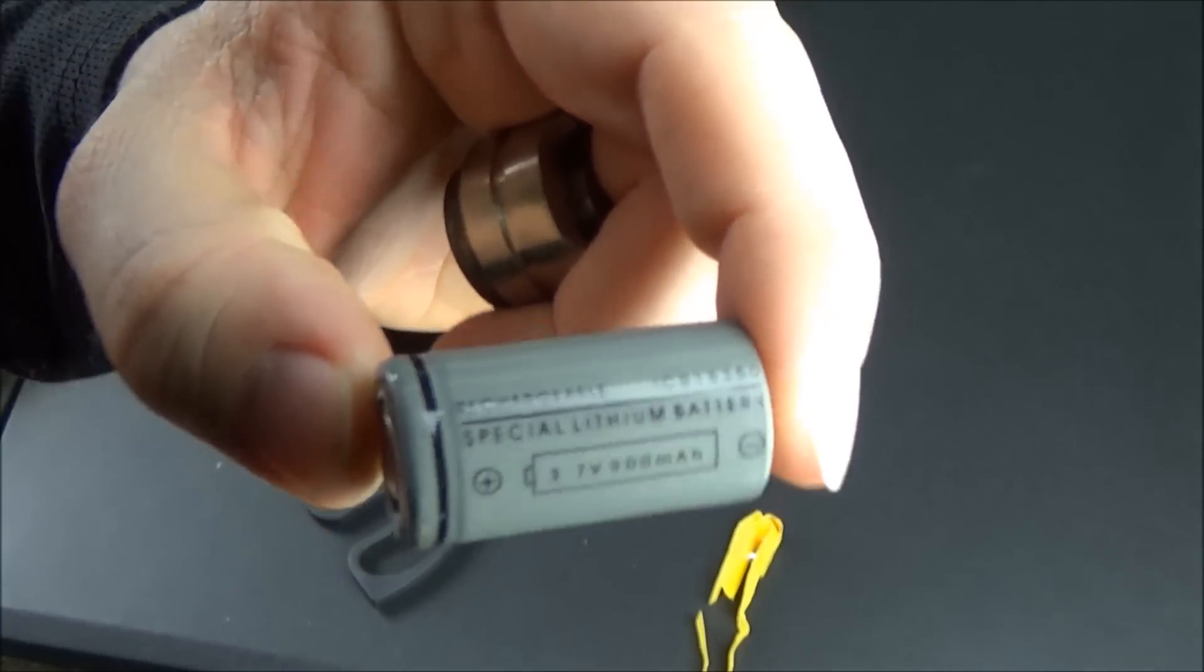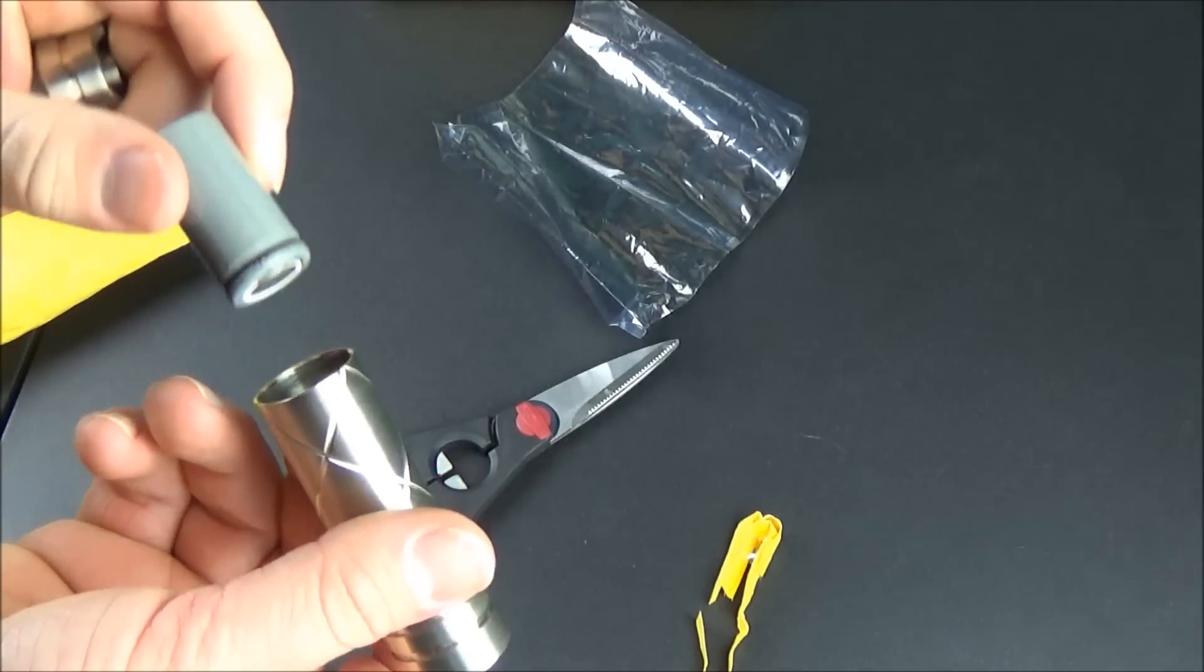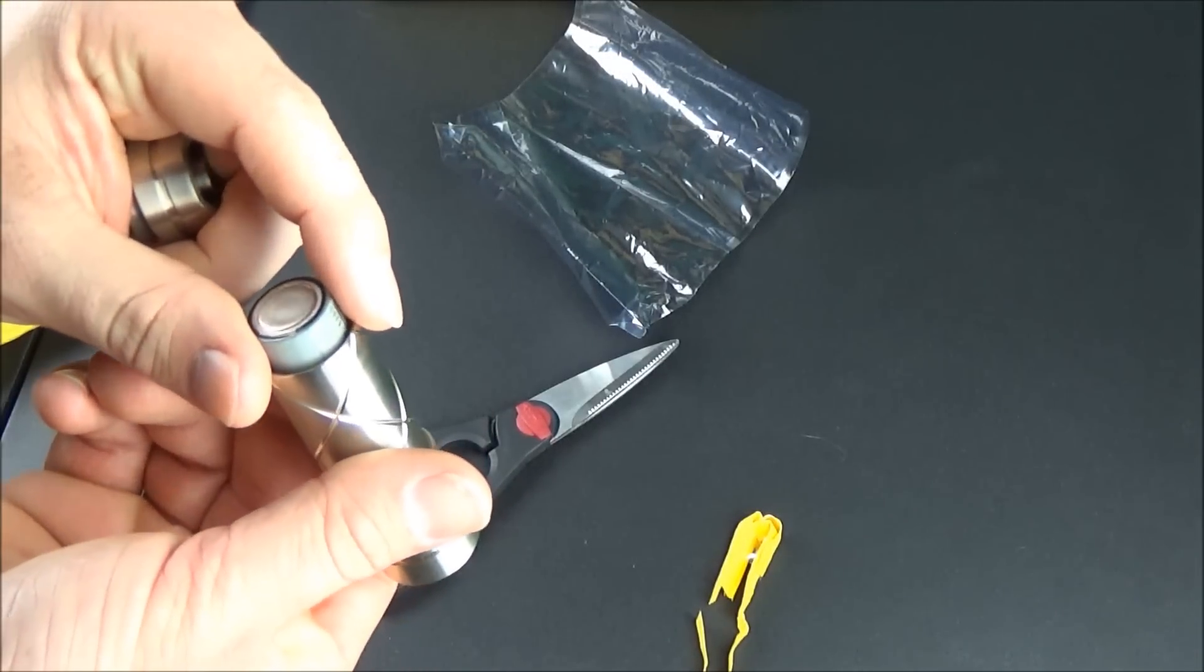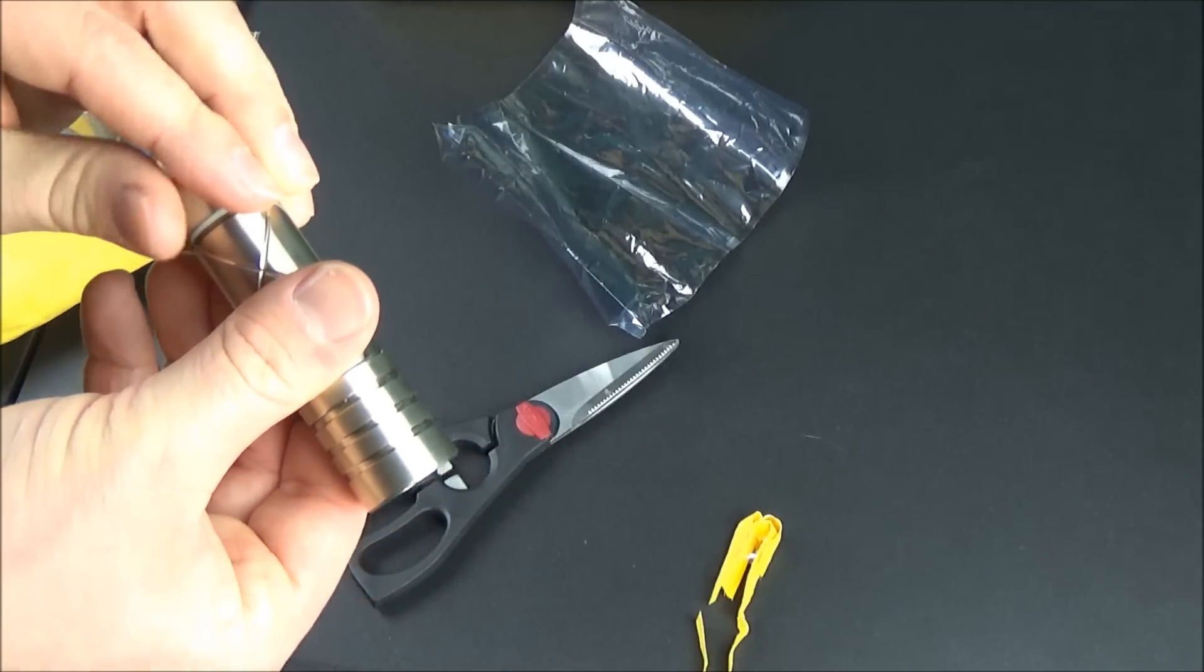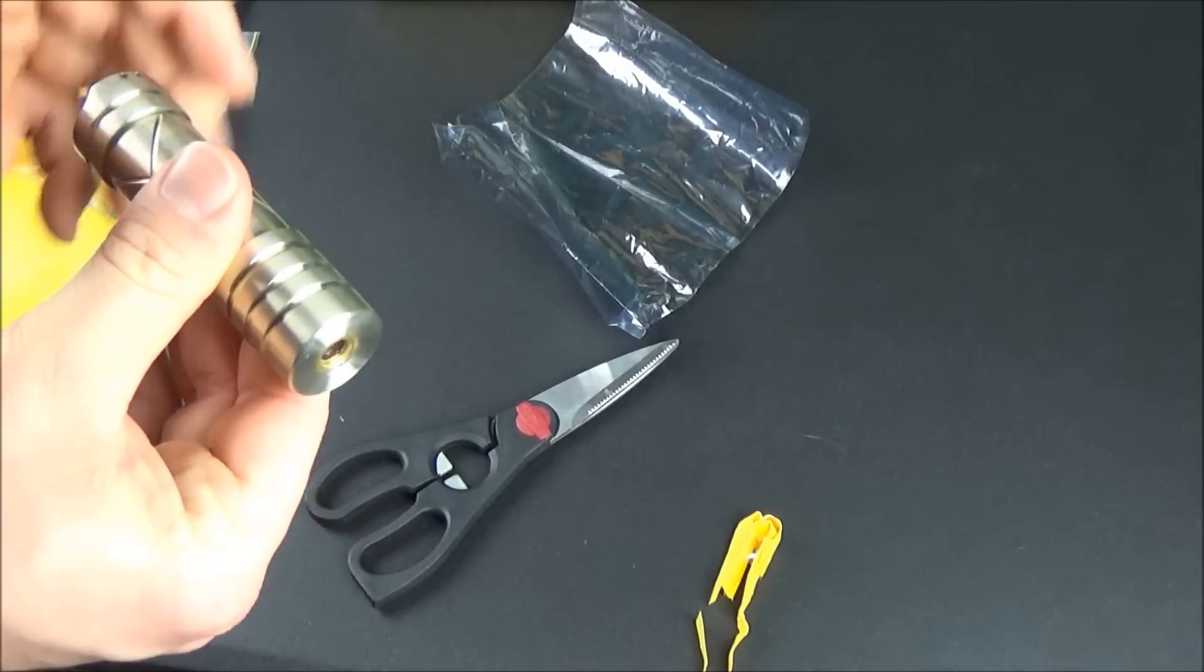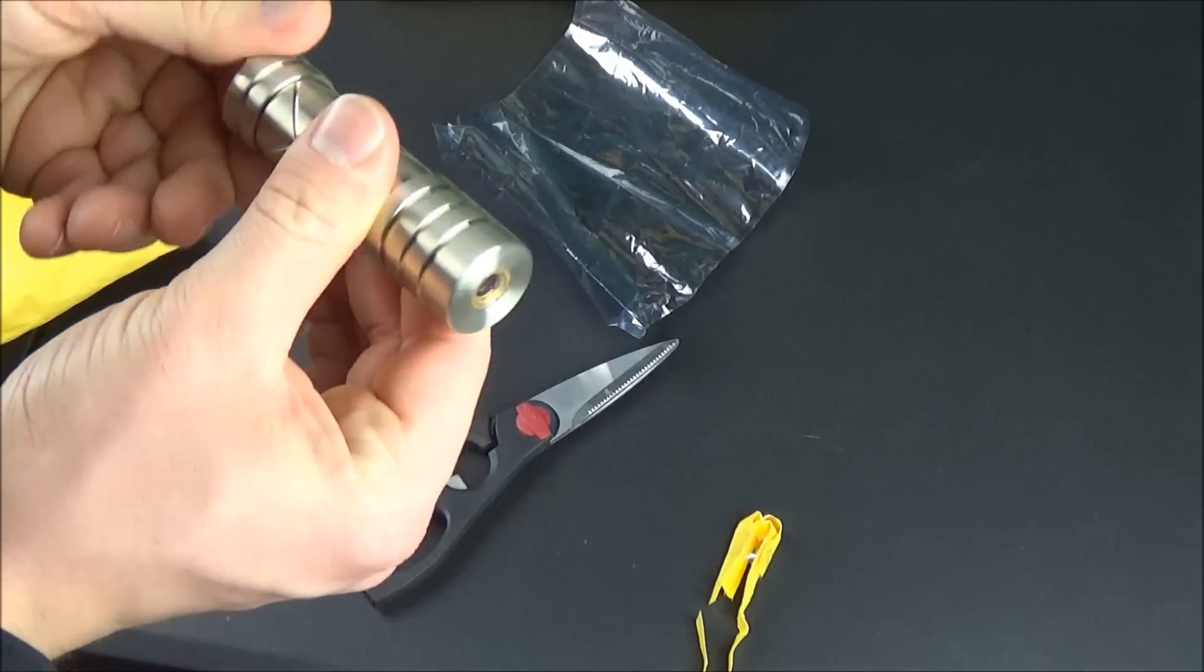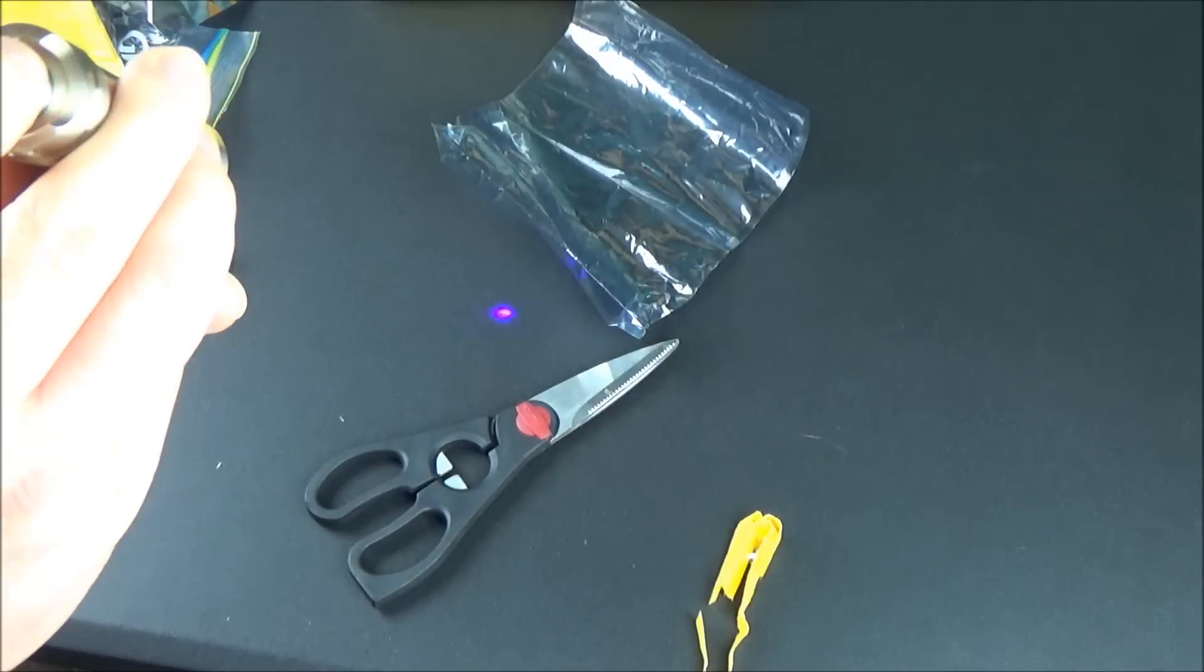So the battery goes in with the positive end facing the diode, negative end facing the tail cap. Be careful where you're pointing it when you're screwing it all back together because that button might be engaged in the on mode. It doesn't appear that mine is right now, so I'll just turn it on here to show you guys the little dot.